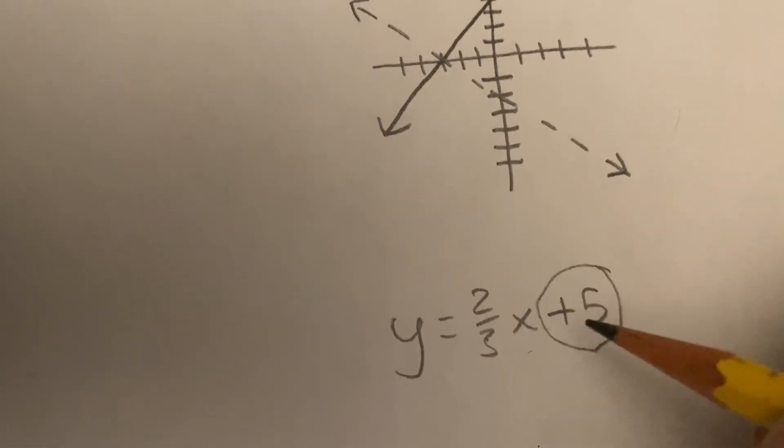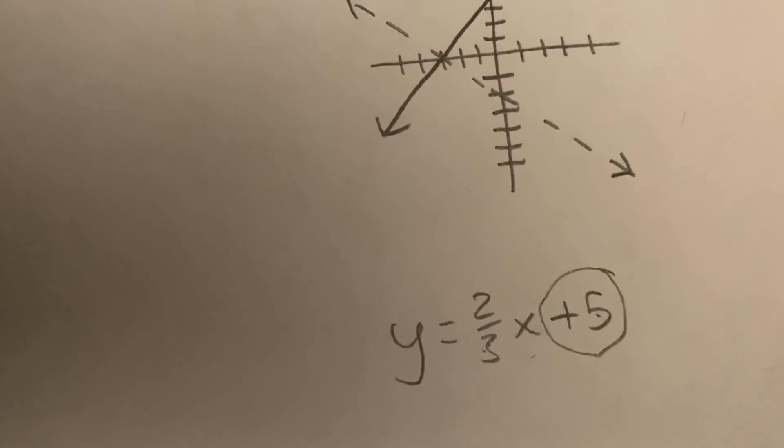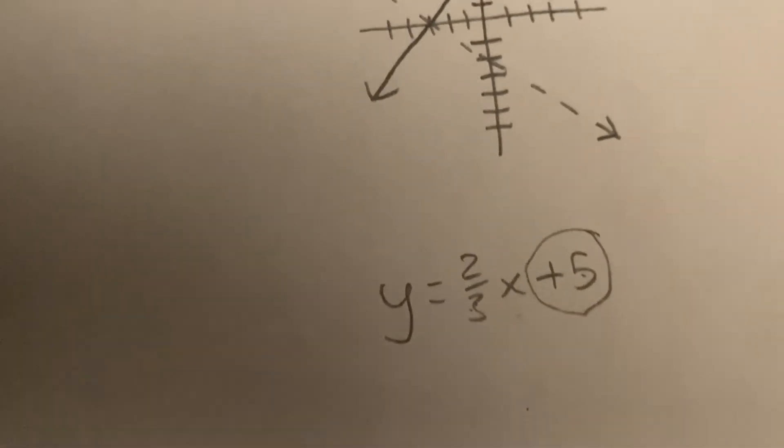So this would be the slope. The slope goes in front of the x. And the y-intercept goes all the way at the end. And that's the reason why this is called the slope-intercept. And that's it.